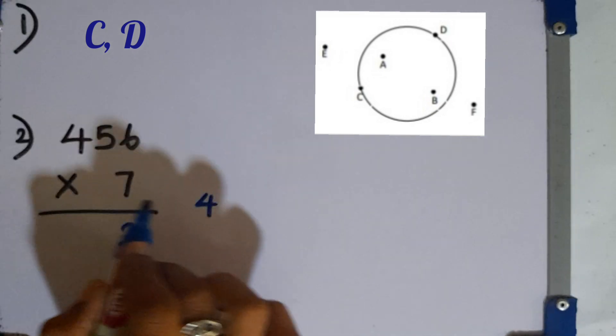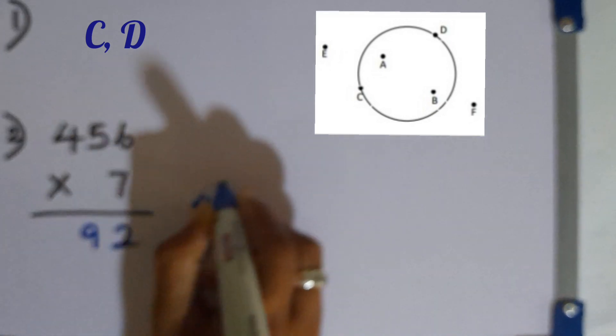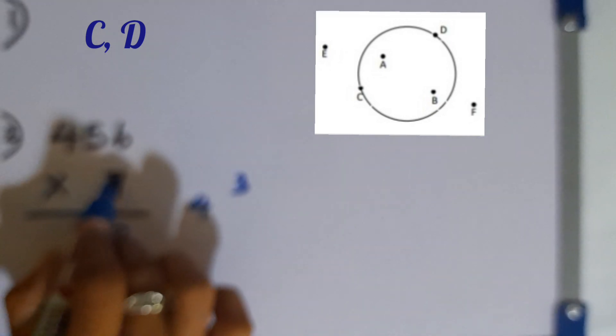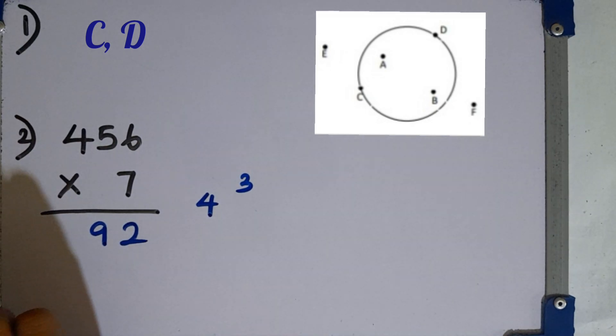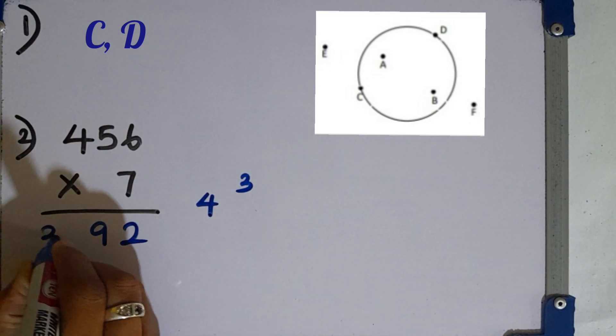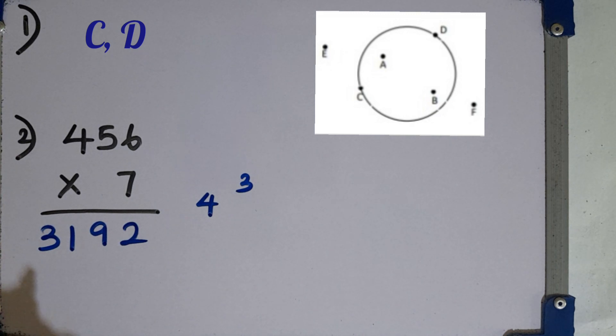7 times 5 is 35. Plus 4 is 39. Then 3 is remaining. 7 times 4 is 28. 28 plus 3 is 31. 3192 is the answer here.